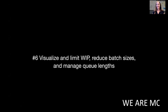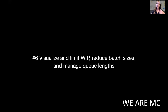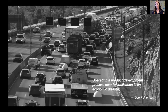SAFe principle number six tells us that we need to visualize and limit work in process. We need to reduce batch sizes and reduce and manage queuing. How do we do that? Andrew is going to join later and talk more about how SAFe helps accelerate this, but I'm going to talk about what happens when we have too much work in process. What we do is we overload the system — that is, the people — and actually get no room for learning or collaborating or getting that flow. To quote Don Reinertsen: to operate a process at full utilization is an economic disaster. And you should avoid that.